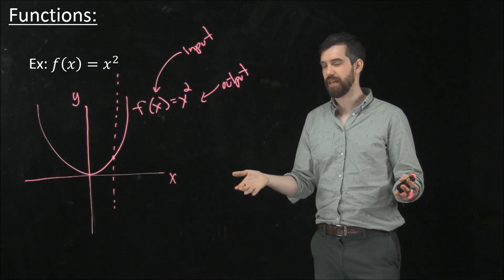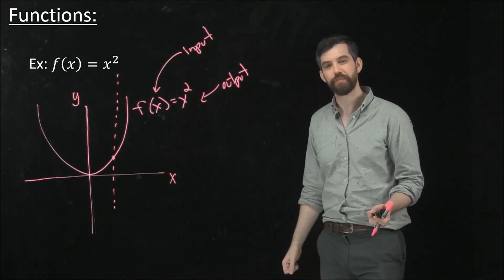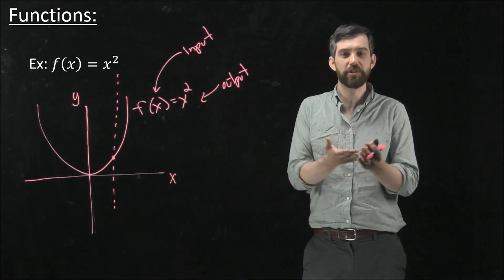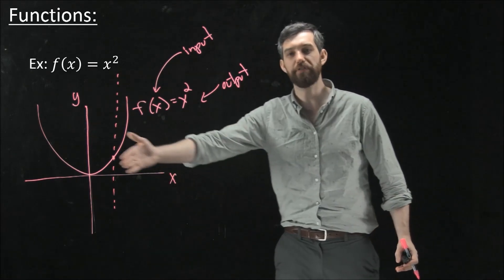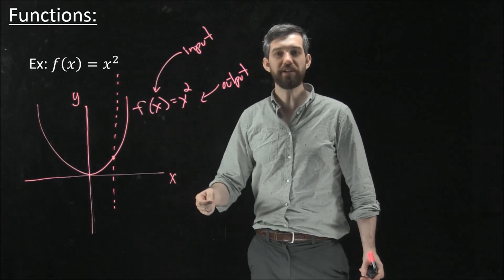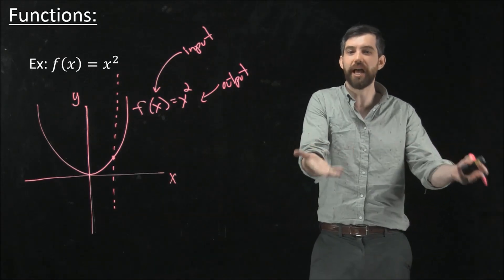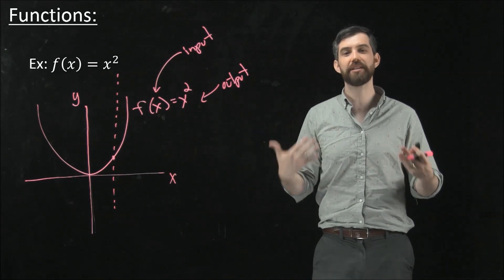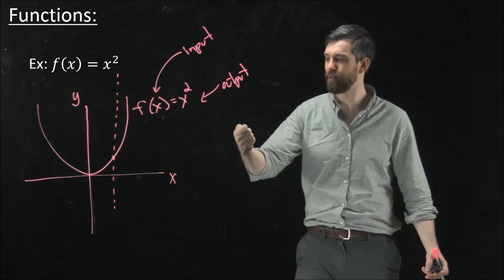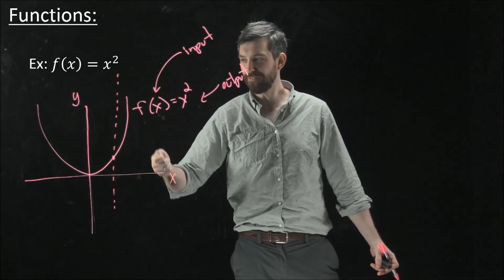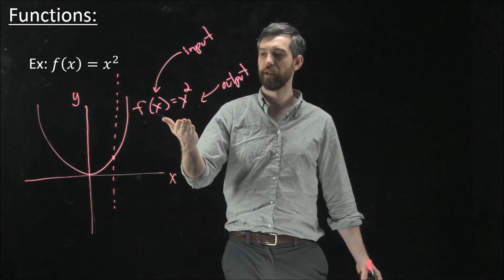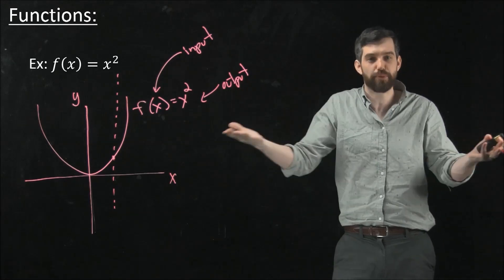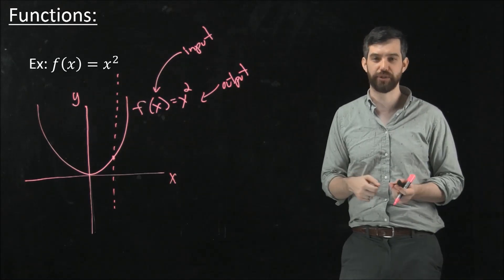And the other condition that we had for functions was that we wanted to have that in the domain, which in this case, the domain is all the input values, which is all of the different real numbers. We want to know that the function actually does something for everything in the domain. The domain is all of the input values. We want to know that for every one of these different x's, the function actually goes somewhere. And this is true for this function. No matter what the x is, it has a prescription for what its output is going to be.